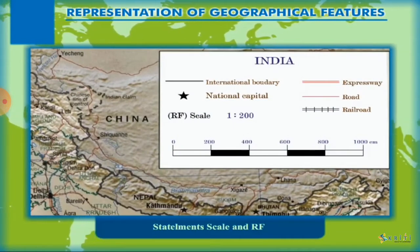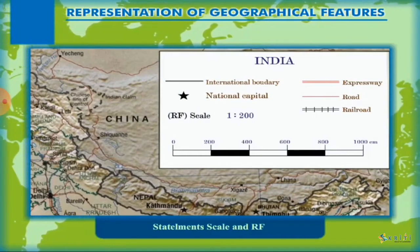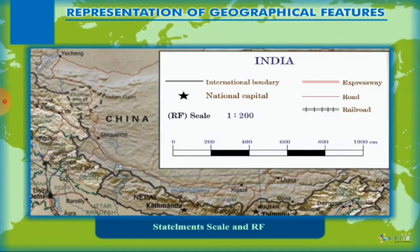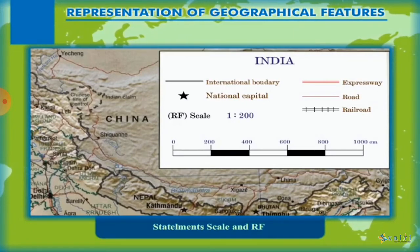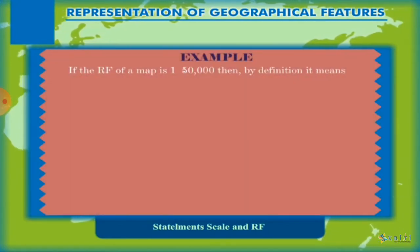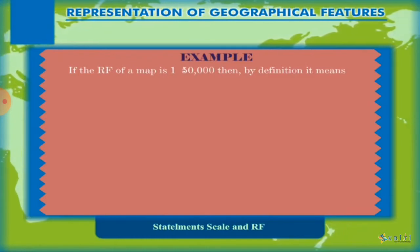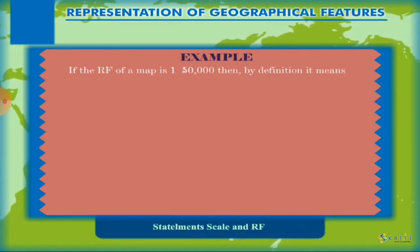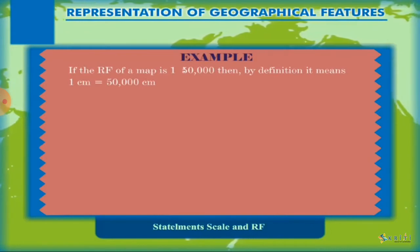The Representative Fraction, or RF scale, is the ratio between the distance on the map and the corresponding distance on the ground. This ratio has no unit. For example, if the RF of a map is 1:50,000, then by definition it means 1 centimeter is equal to 50,000 centimeters.